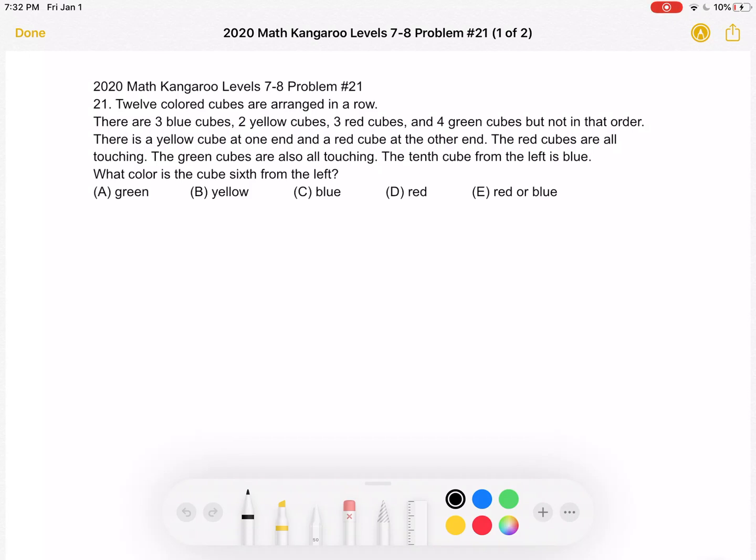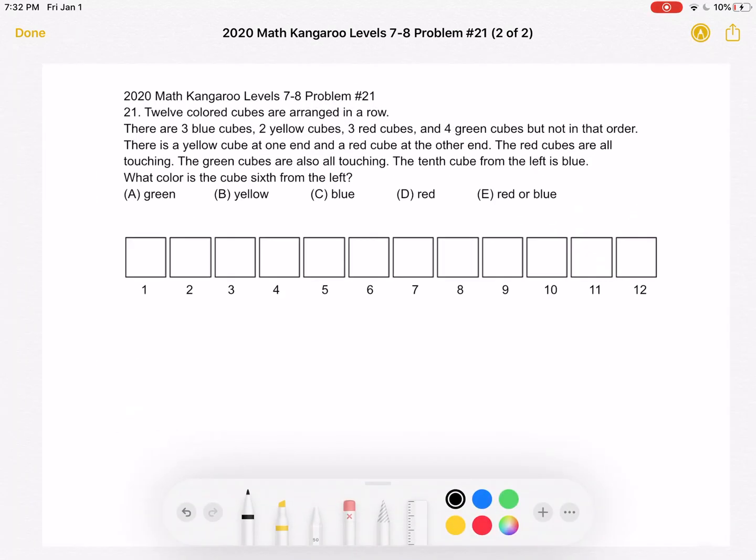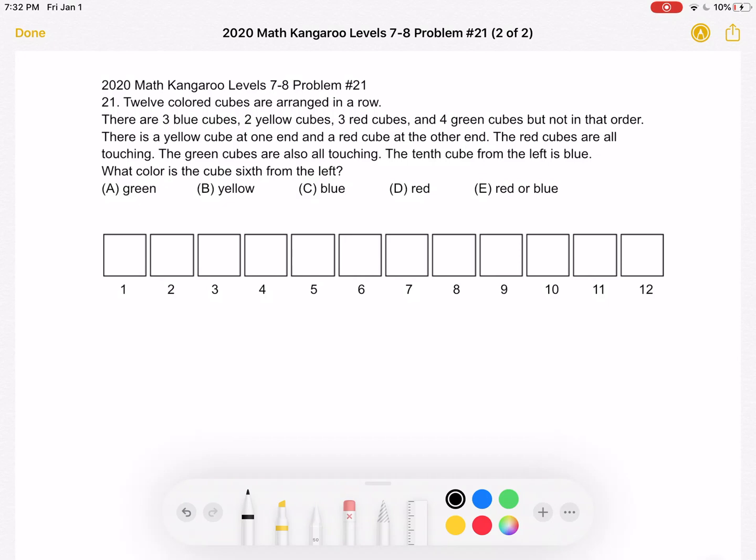This is the problem as it originally appeared on the test, and here is where we'll be doing the solution. To start, as you can see, I've drawn 12 squares to represent the different cubes we have, and I've labeled them so that we can better orient ourselves as far as position goes.